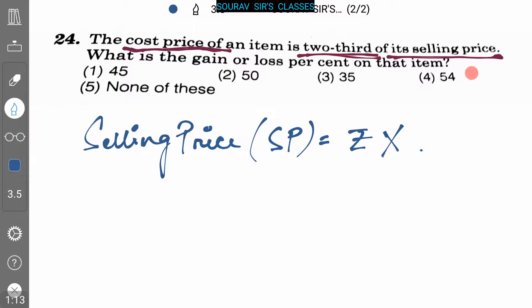As it is given that the cost price of an item is two-thirds of its selling price, the cost price, that is CP, equals rupees 2x/3.